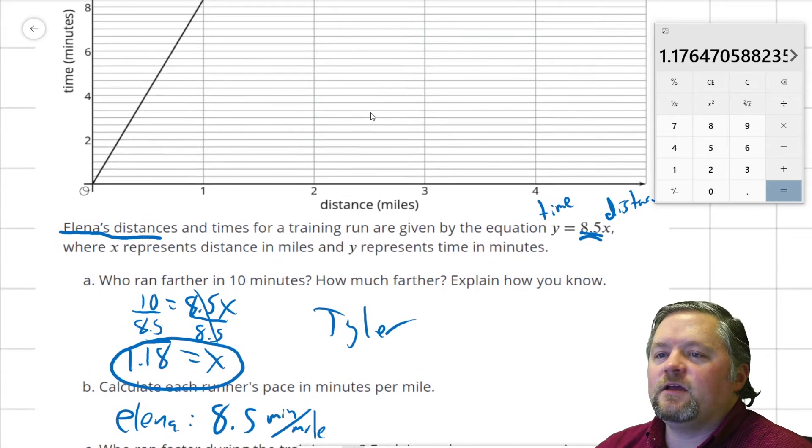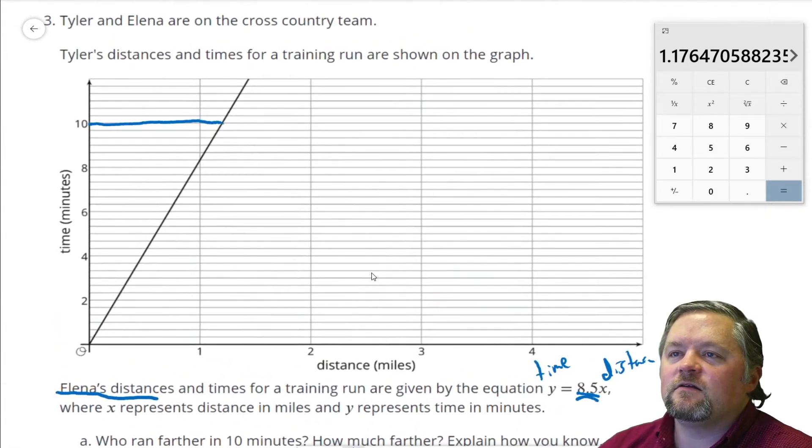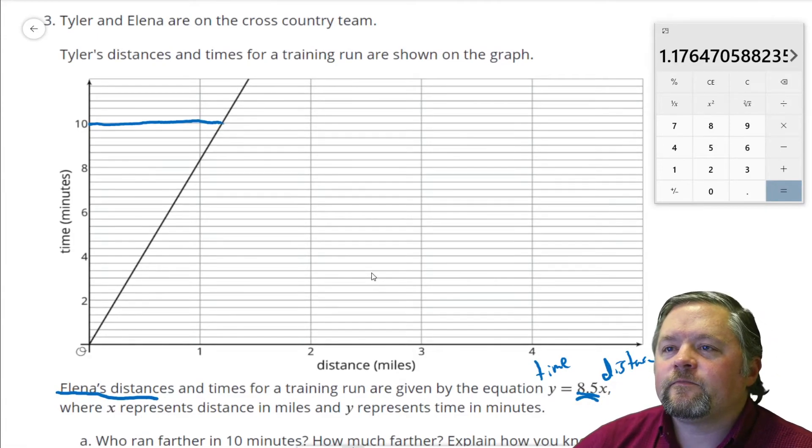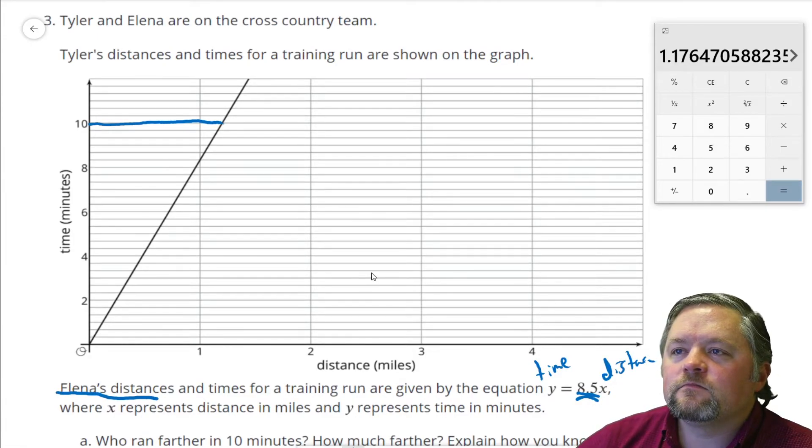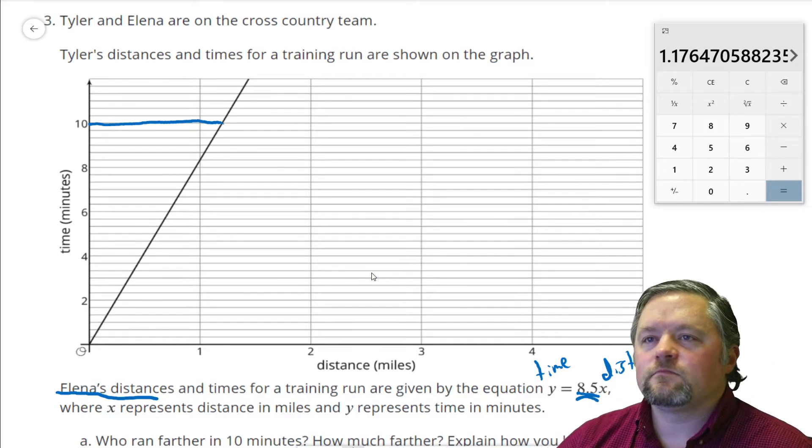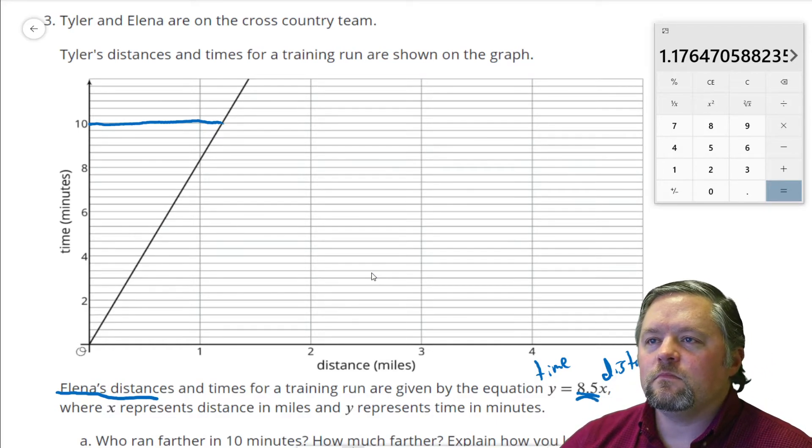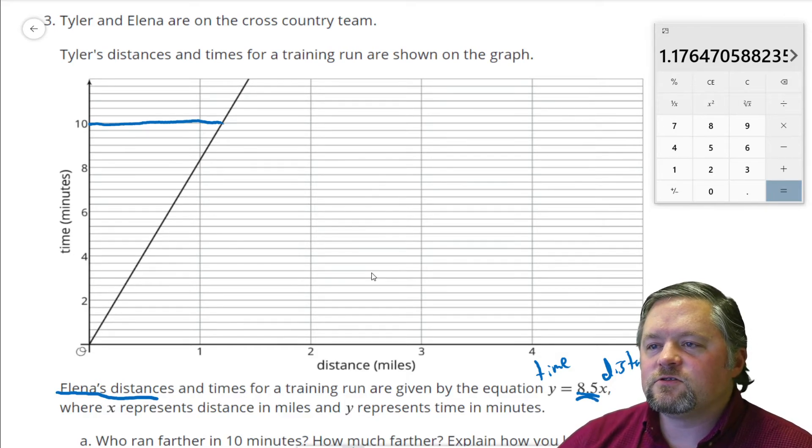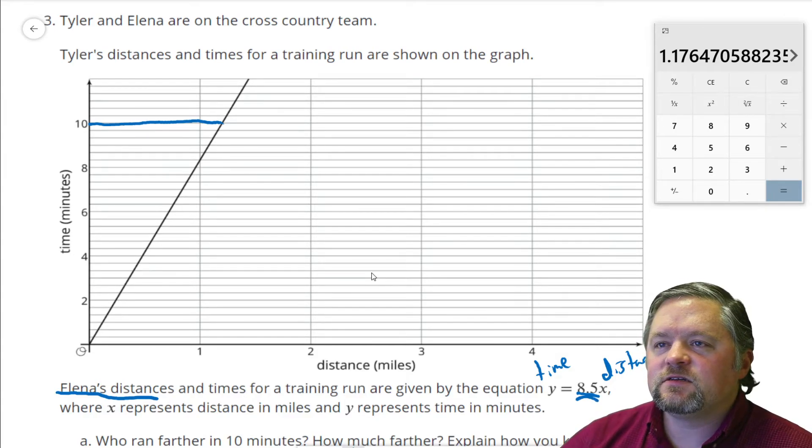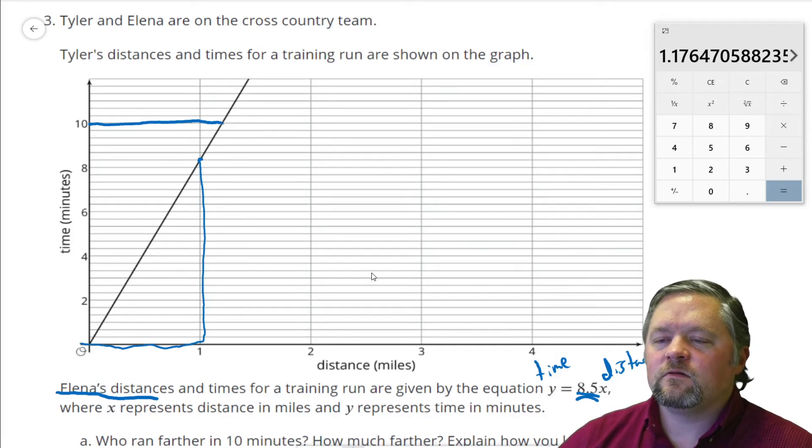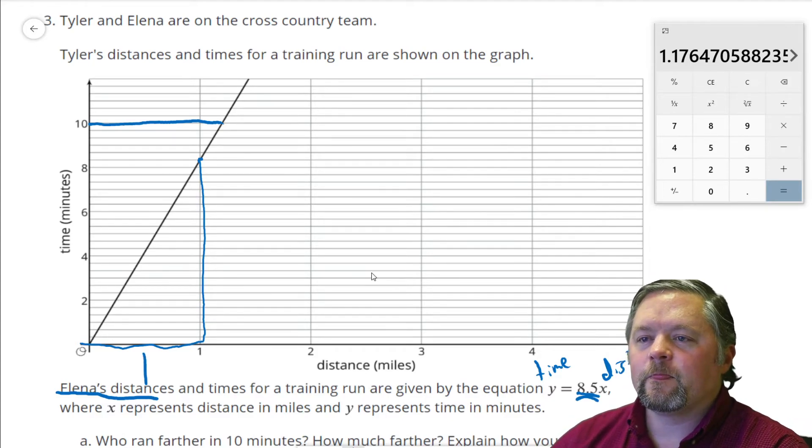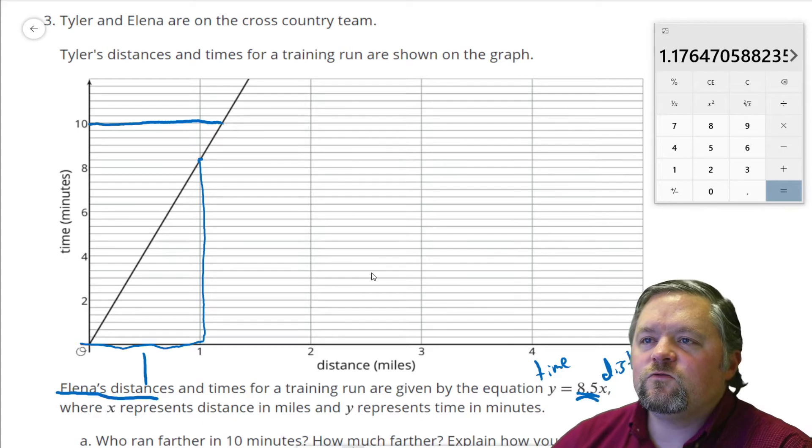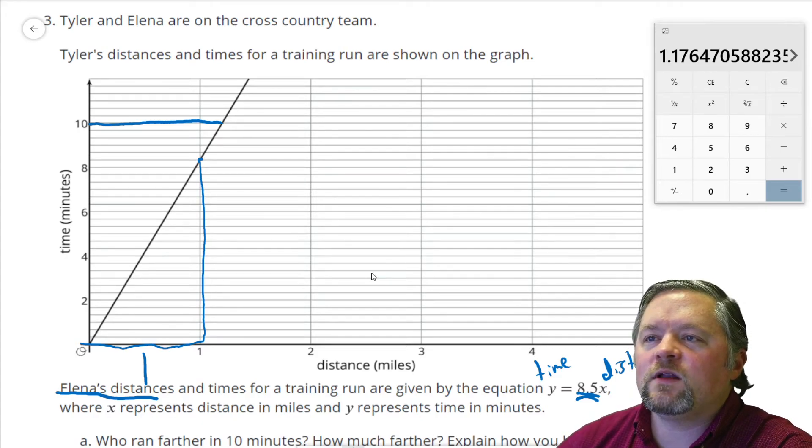Now, let's look up here at Tyler. Looks like Tyler goes distance. That would be our unit rate. We have a run of 1 and a rise of 2, 4, 6, 8, and one extra line.